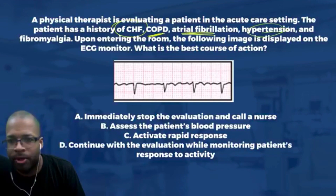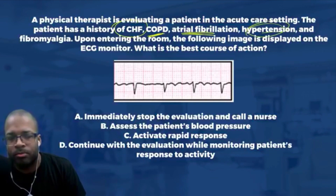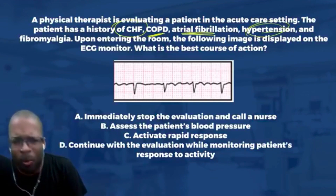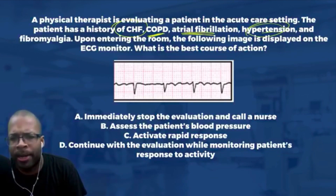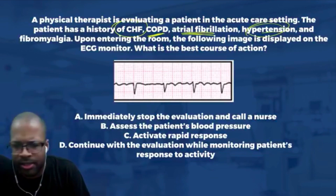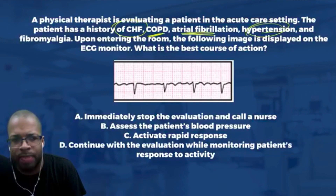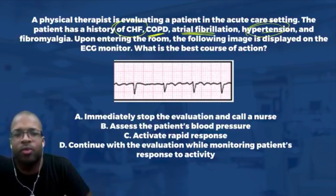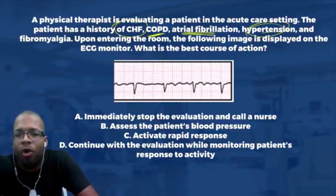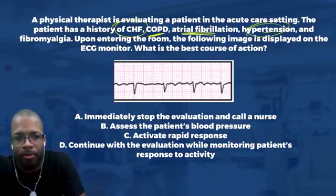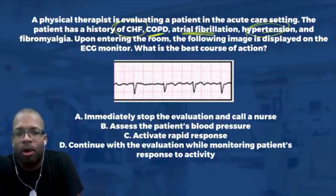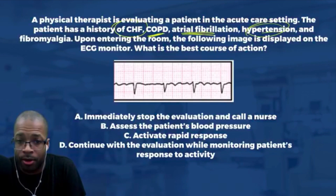The patient also has hypertension — high blood pressure, which most people are familiar with — and fibromyalgia, a rheumatic condition characterized by myalgias, pain at various tender points throughout the body, and significant fatigue as a major component. So we have this list of comorbidities, and now upon entering the room, an image is displayed on the ECG monitor. What is the best course of action?